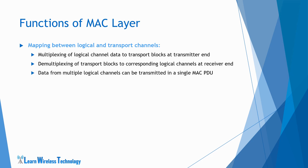Multiplexing at the MAC layer enables data from multiple logical channels to be transmitted in a single MAC PDU, which can be transmitted on the DLSCH (downlink shared channel) and ULSCH (uplink shared channel), which are transport channels. Priority of logical channels is also considered during multiplexing. We will talk about MAC PDU in more detail in coming slides.